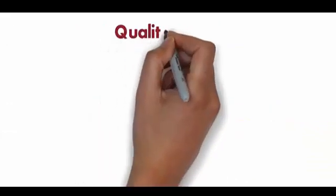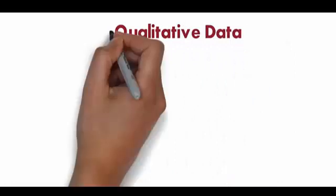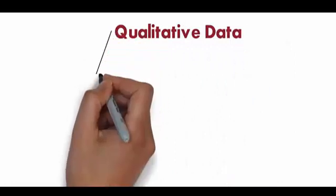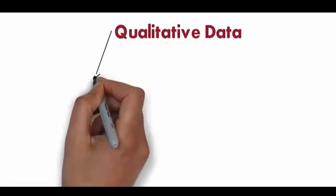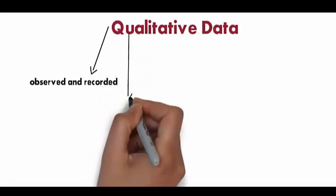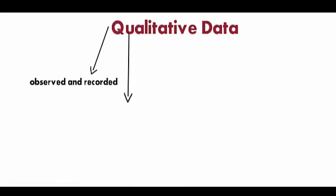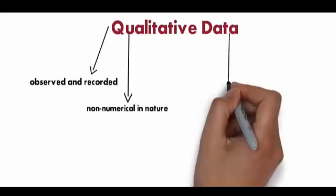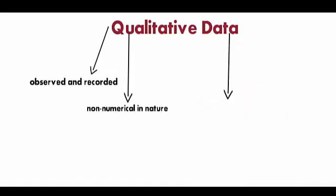What is qualitative data? Qualitative data is defined as the data that approximates and characterizes. Qualitative data can be observed and recorded. This data type is non-numerical in nature.